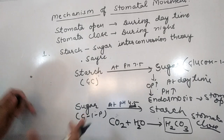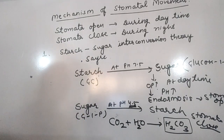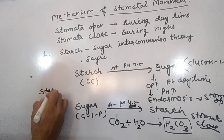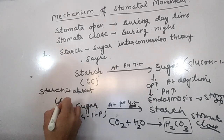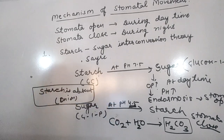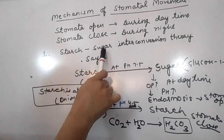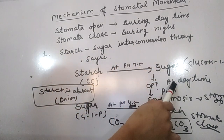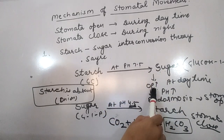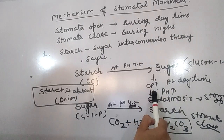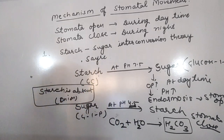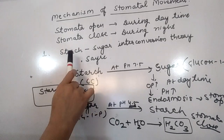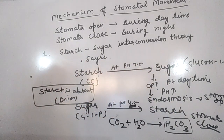However, this theory was not completely accepted because starch is absent in some monocots like onion. The objection is: if starch is absent in some monocots, how does this process occur? So the Starch-Sugar Interconversion Theory was not completely accepted. In summary: starch converts into sugar at daytime at high pH, osmotic pressure rises, endosmosis occurs, and stomata open. At night, sugar converts into starch at low pH.